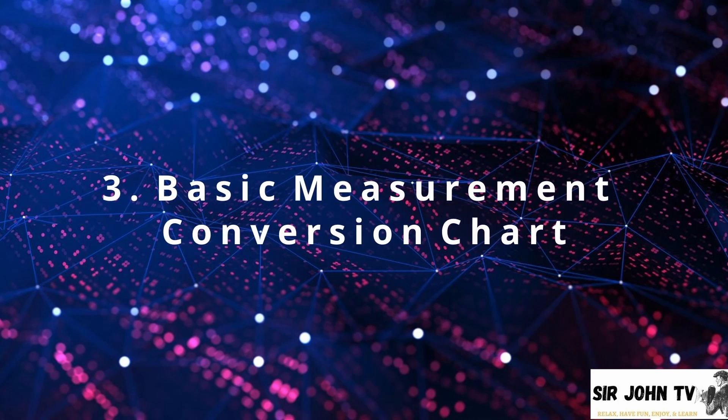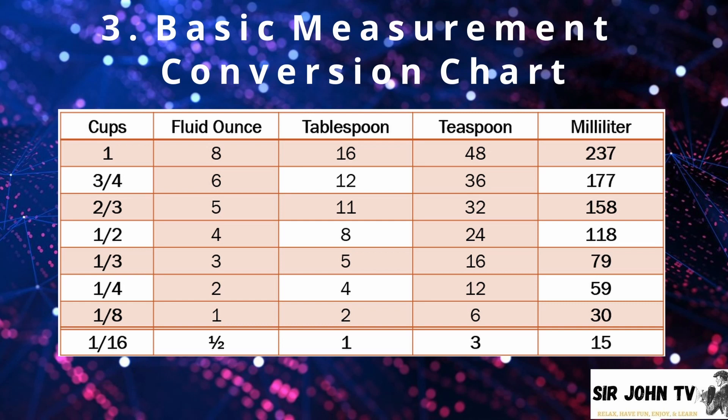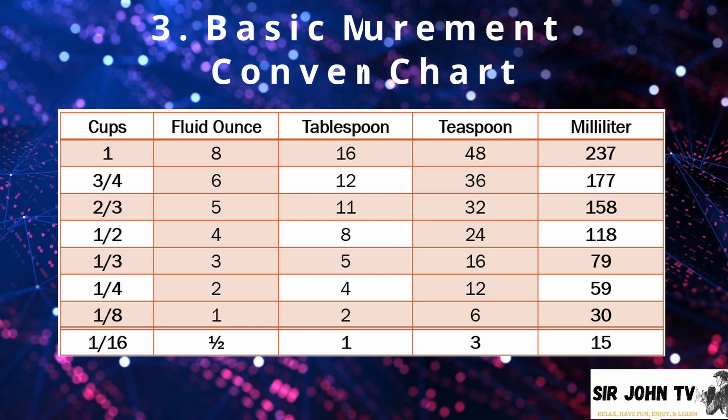Our number three method of recording weights and measurement is the basic measurement conversion chart. It is very easy to use. We have here in our table the equivalent of each one. So we have cups that is equal to 1 cup that is equivalent to fluid ounce, tablespoon, teaspoon, and milliliters. So from 1 cup to 1 1/16 cup. This equivalent can be used while we go on with our problem in converting the units of measurement. Remember this table.